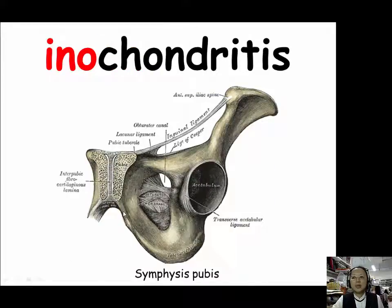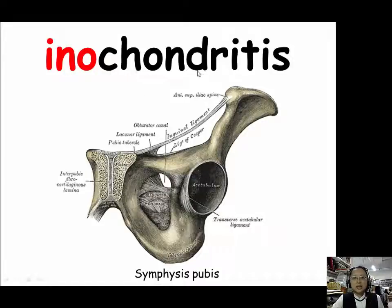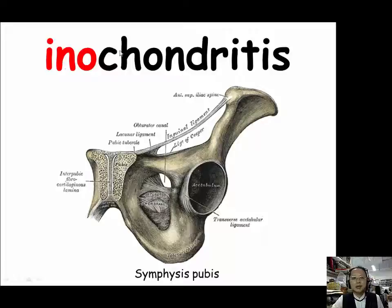For INO (I-N-O), our example is enchondroblast. The prefix CHONDR means granule or relating to cartilage, and INO means fiber. The suffix -ITIS means inflammation, which will be introduced later in our course.